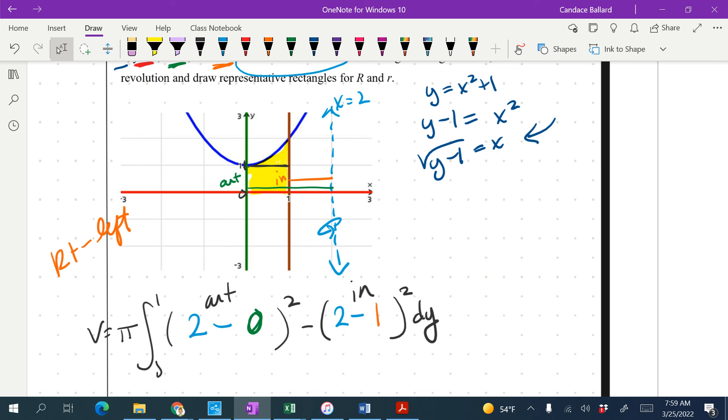Now that was only half of our yellow region here, we have to do the other half. So I'm going to start it the same way, plus pi for my revolution. We're going from 1 to 2 this time. We've got a squared, we're going to have to subtract squared dy.